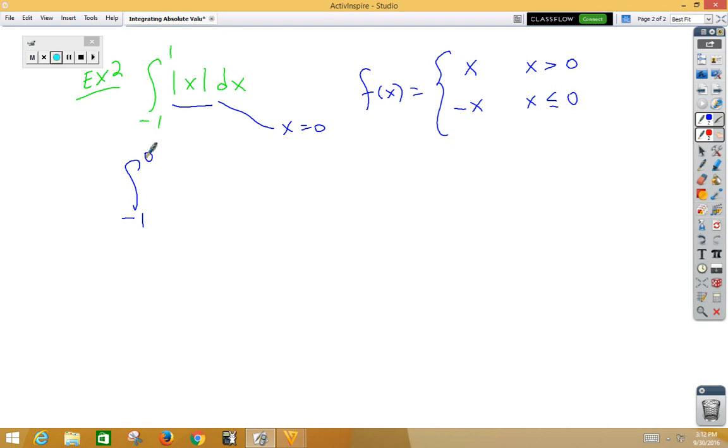From negative 1 to 0, we need the part of the function that is less than 0, so that would be negative x dx plus the integral from 0 to 1. Now we need the piece that is greater than 0, which would be x dx.